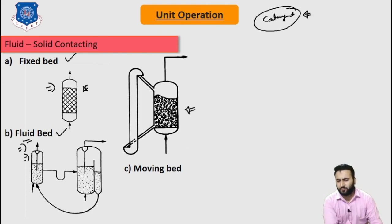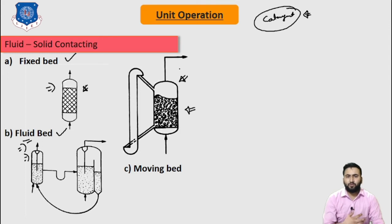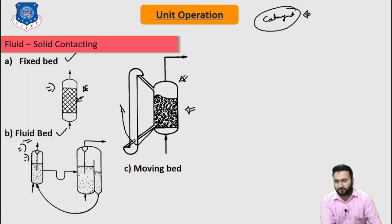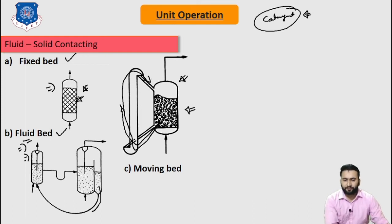Now let's discuss about the moving bed. This is the symbol of the moving bed. It combines the virtues of a fixed bed reactor with the ability to regenerate catalyst by movement through separation and regeneration zones. Here the catalyst is fixed in a fluid bed; we can separate the catalyst after conversion and reuse it continuously. This is how it becomes our moving bed reactor.